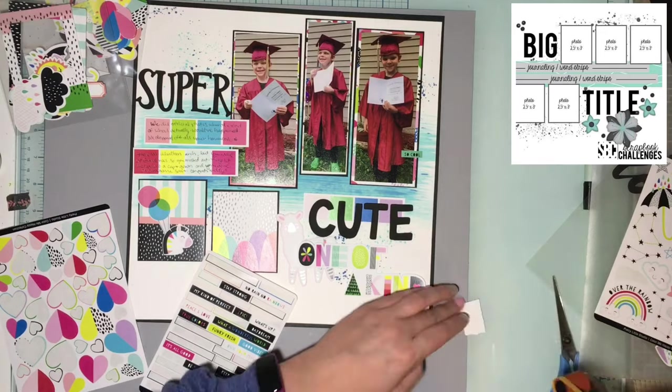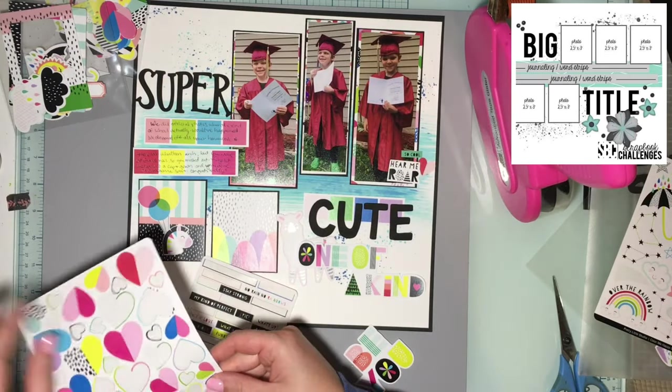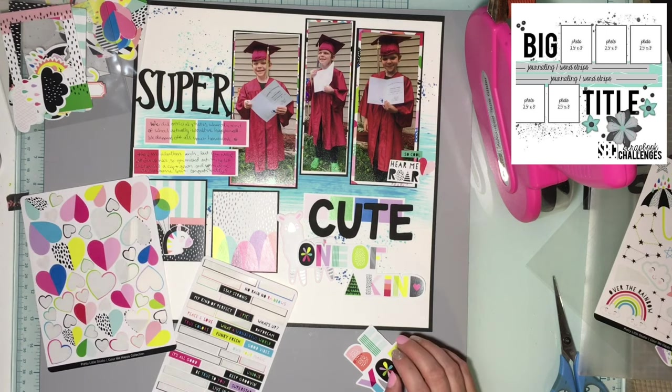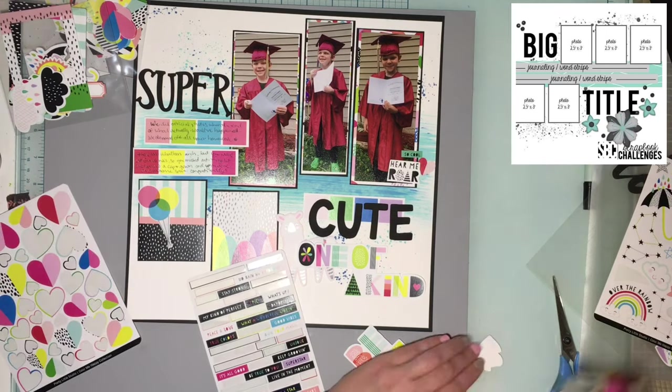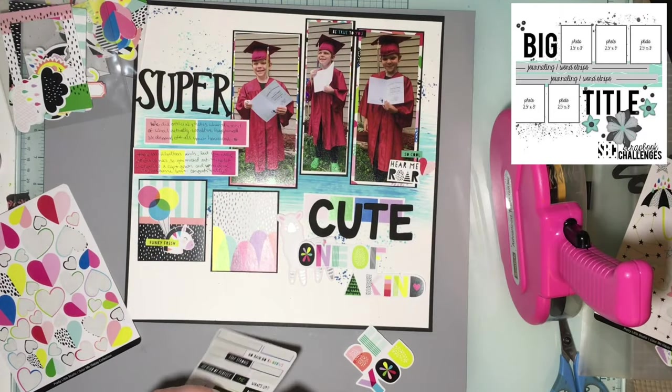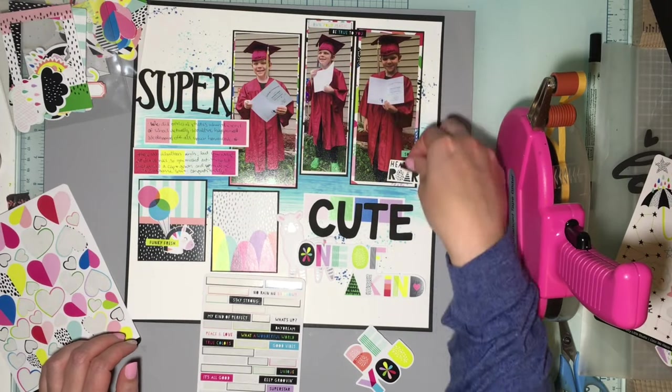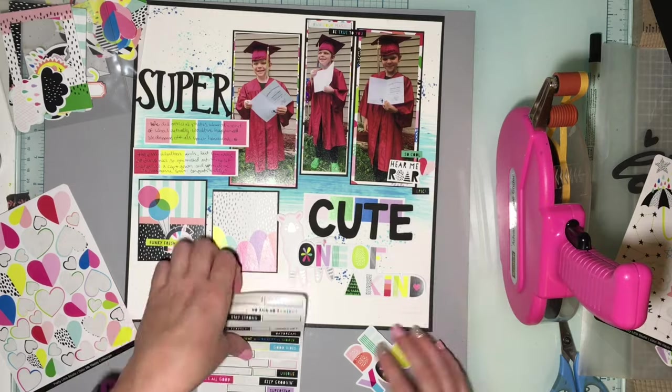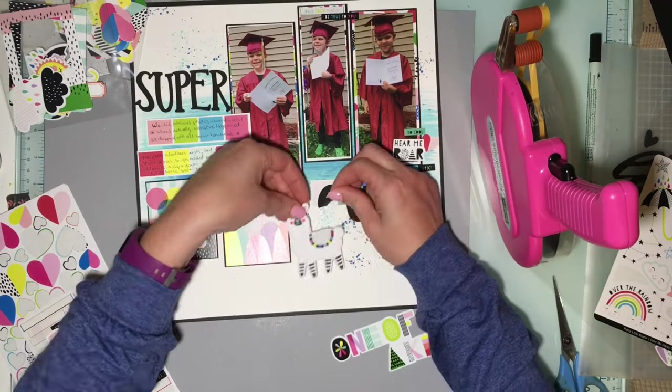I'm moving things around. I really like hear me roar, so I'm putting that down there. I love a lot of the word phrases, so I'm going to use so cool and epic over there. I'll put a heart sticker and one of the foam hearts from the Thicker set. I'm putting be true to you and own your magic up top, then sprinkle a couple hearts up there as well, one foam, one sticker.